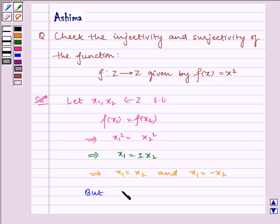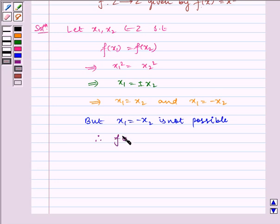But x1 equals minus x2 is not possible. Therefore, f is not one-one.